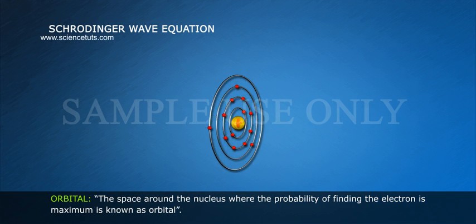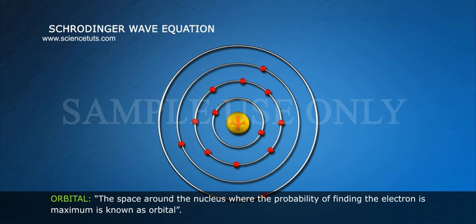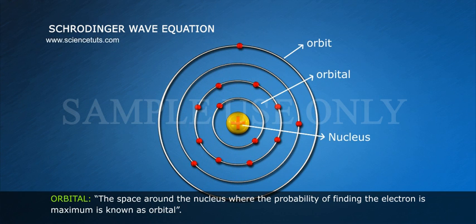Orbital. The space around the nucleus where the probability of finding the electron is maximum is known as orbital.